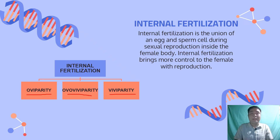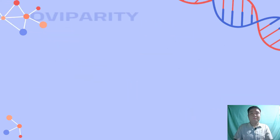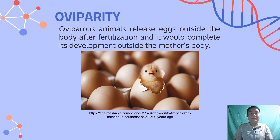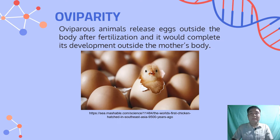The first type is oviparity. Oviparous animals release eggs outside the body after fertilization, and the egg completes its development outside the mother's body. The egg receives its nourishment through its yolk. This is found in some bony and cartilaginous fish, most reptiles, some amphibians, a few mammals called monotremes, and all birds, just like the chick seen in the picture.